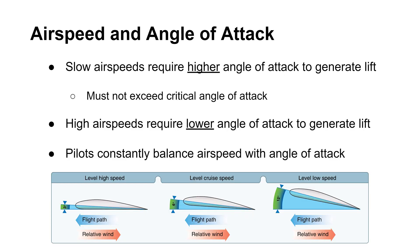Next, let's examine the relationship between airspeed and the angle of attack. If an airplane flies at slower speeds, the pilot must maintain a higher angle of attack to maintain lift and avoid a stall. Recall that increasing the angle of attack increases the lift, but this angle of attack must not exceed the critical angle of attack. Conversely, higher airspeeds need a smaller angle of attack to generate lift, because more air passes through aircraft wings at higher speeds. Thus, pilots must always balance out the aircraft's airspeed with the angle of attack.